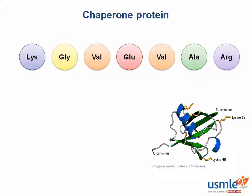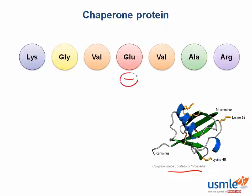So we have to get from this sequence of amino acids into a complicated three-dimensional shape, like our ubiquitin protein here — which, by the way, is not a chaperone protein. So how might these fold? Well, glutamate is negatively charged, and lysine over here is positively charged, so maybe they'll try to stick together.